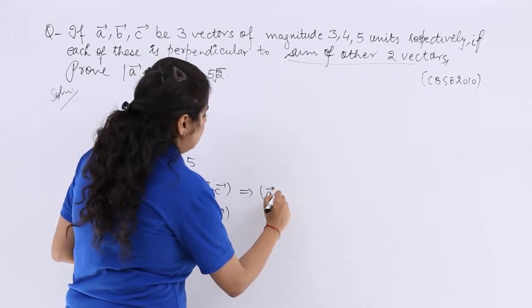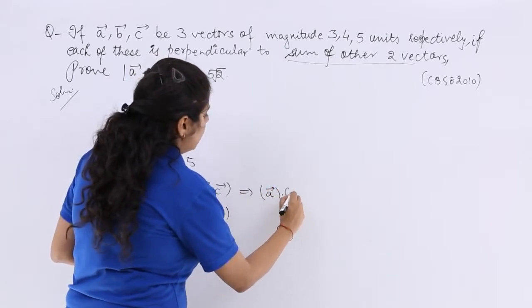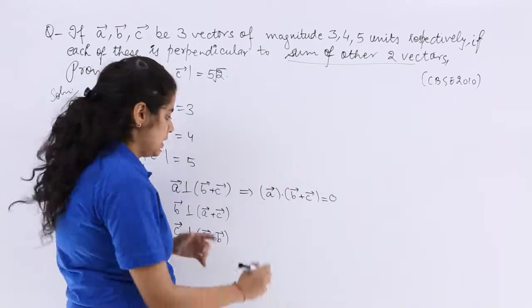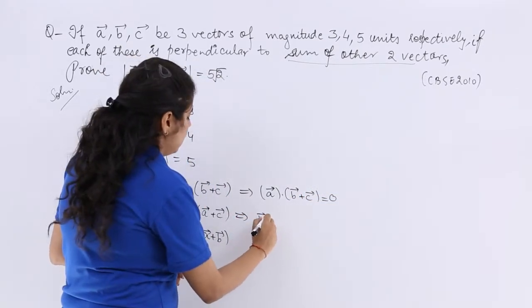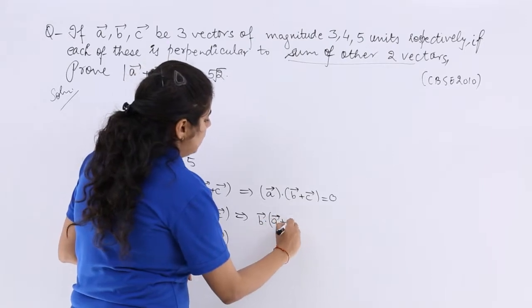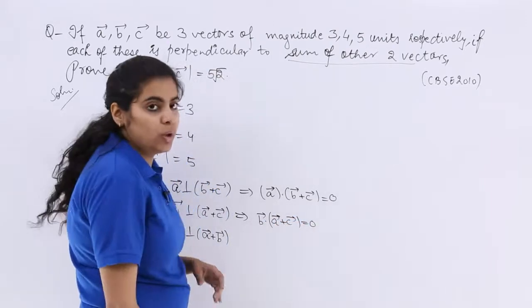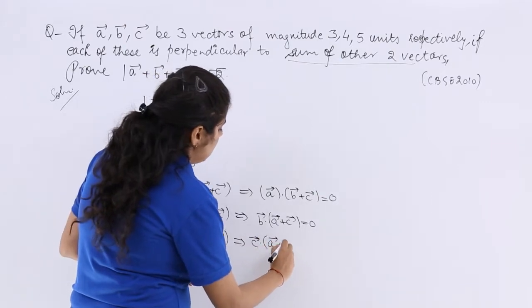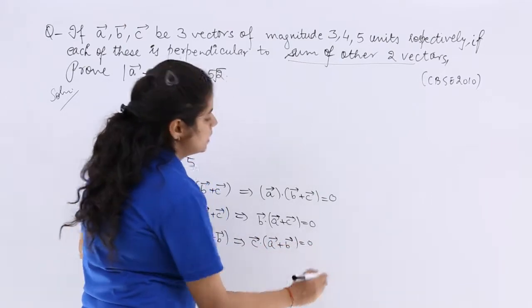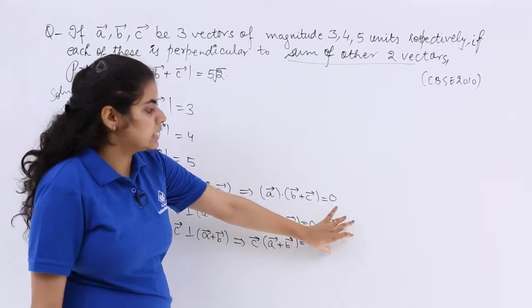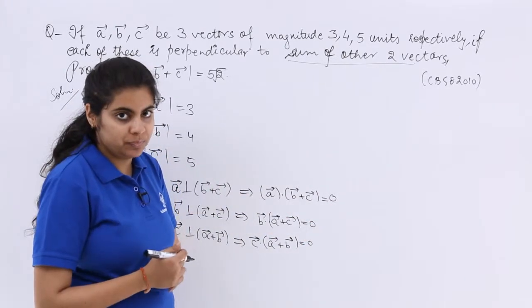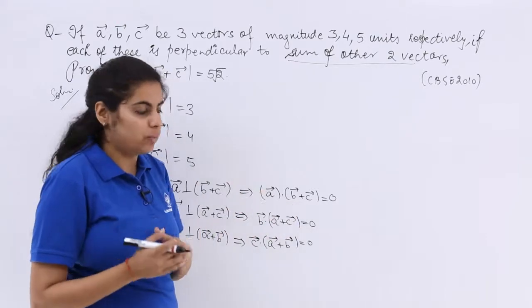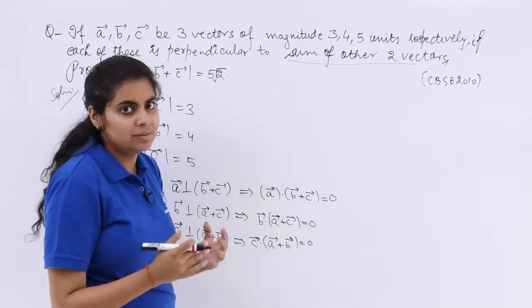That means A vector dot product with B plus C is 0. Similarly B vector dot A plus C vector is equal to 0. Similarly C vector dot A plus B vector is equal to 0. Now this is satisfied for the dot product. Can you open this up a bit? Yes we can.